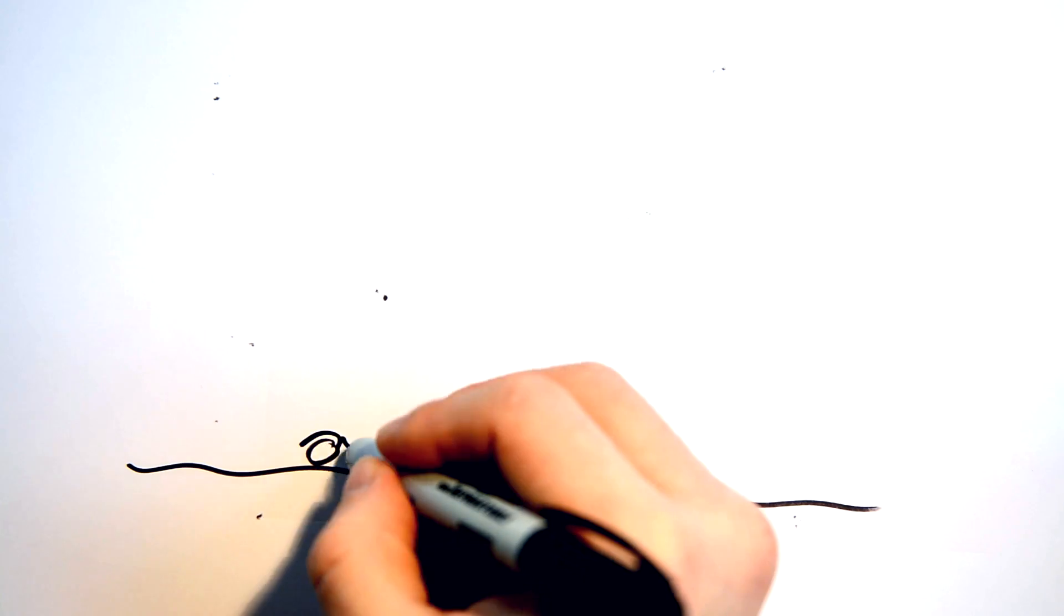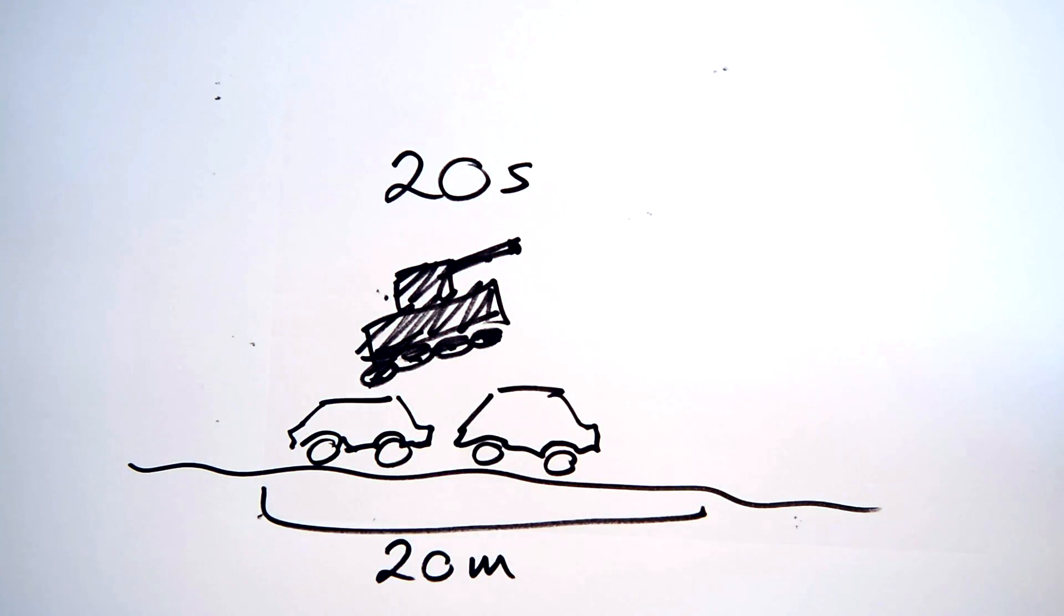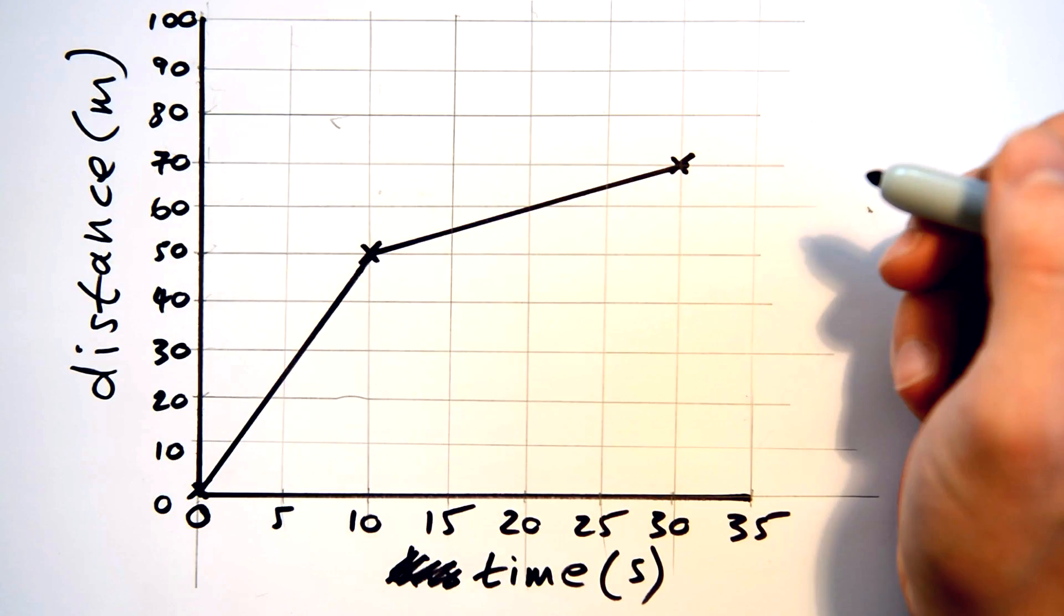Bob then hits some traffic so naturally it takes a bit of extra time to get over the cars. Over the next 20 seconds he only moves 20 meters so we draw a line now going to 70 meters and 30 seconds.